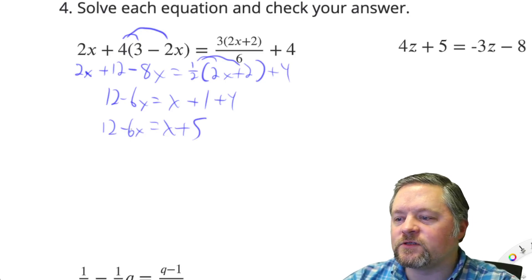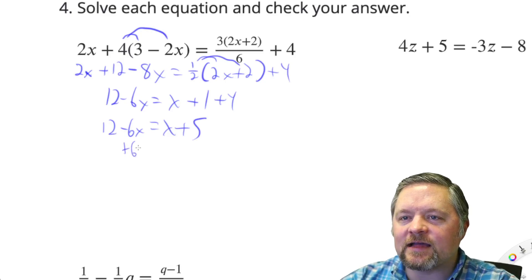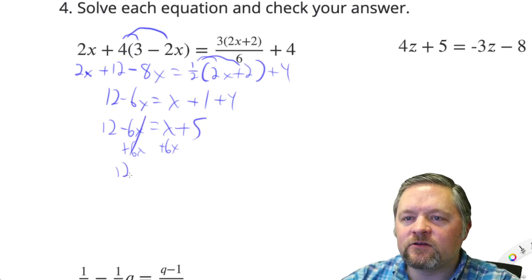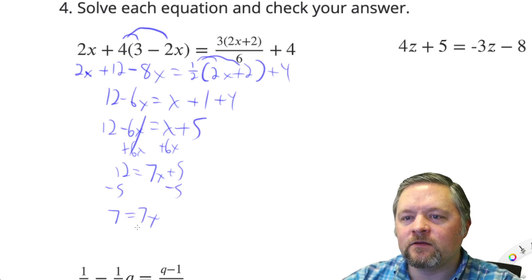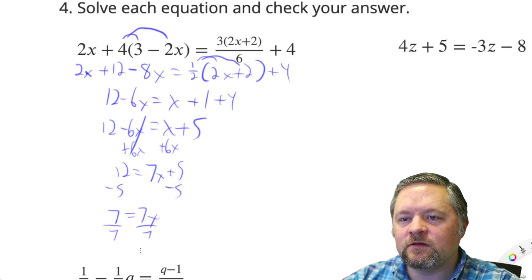Get all the x's on one side. Negative 6 is less than 1, so let's add 6x to each side. That gets rid of the negative x's. 12 equals x plus 6x is 7x plus 5. Subtract 5 from each side, and 7 equals 7x. Divide each side by 7, and 1 equals x.